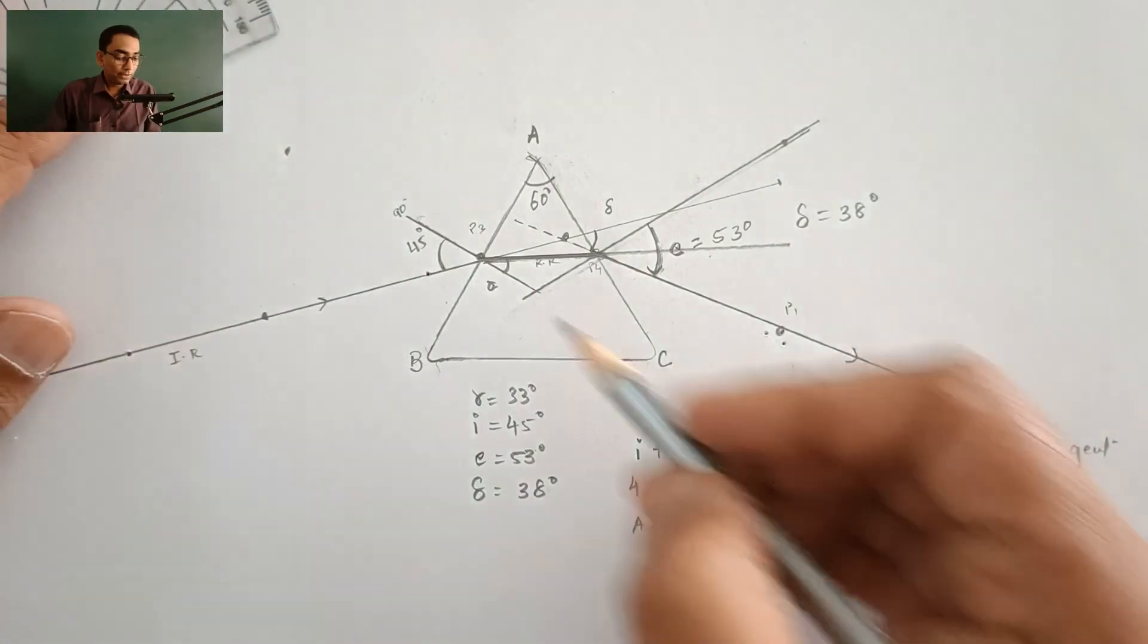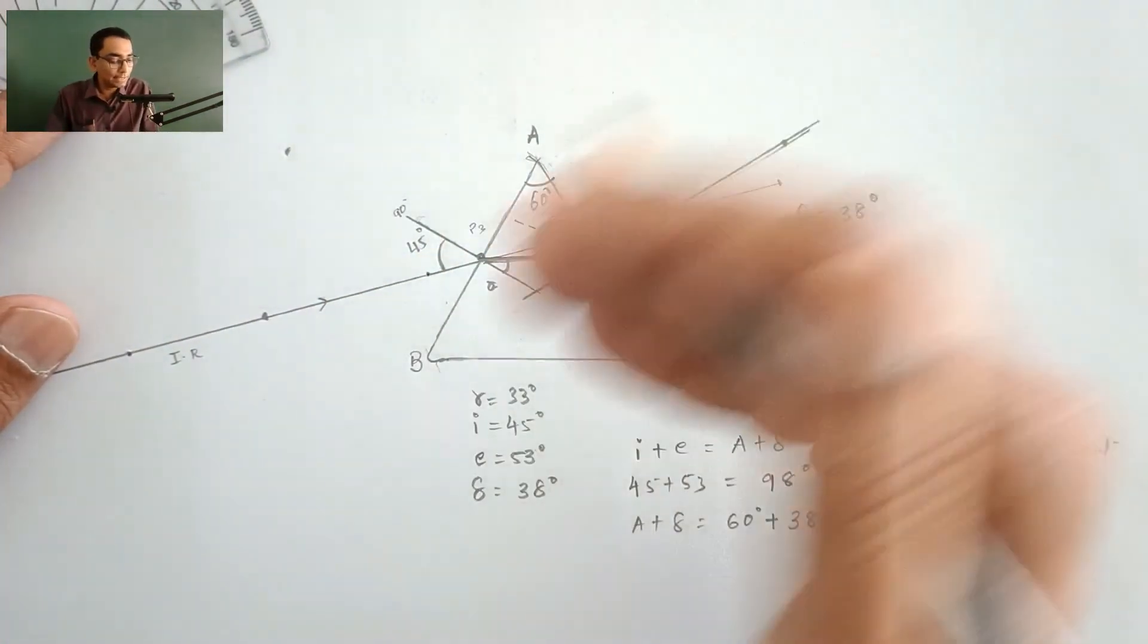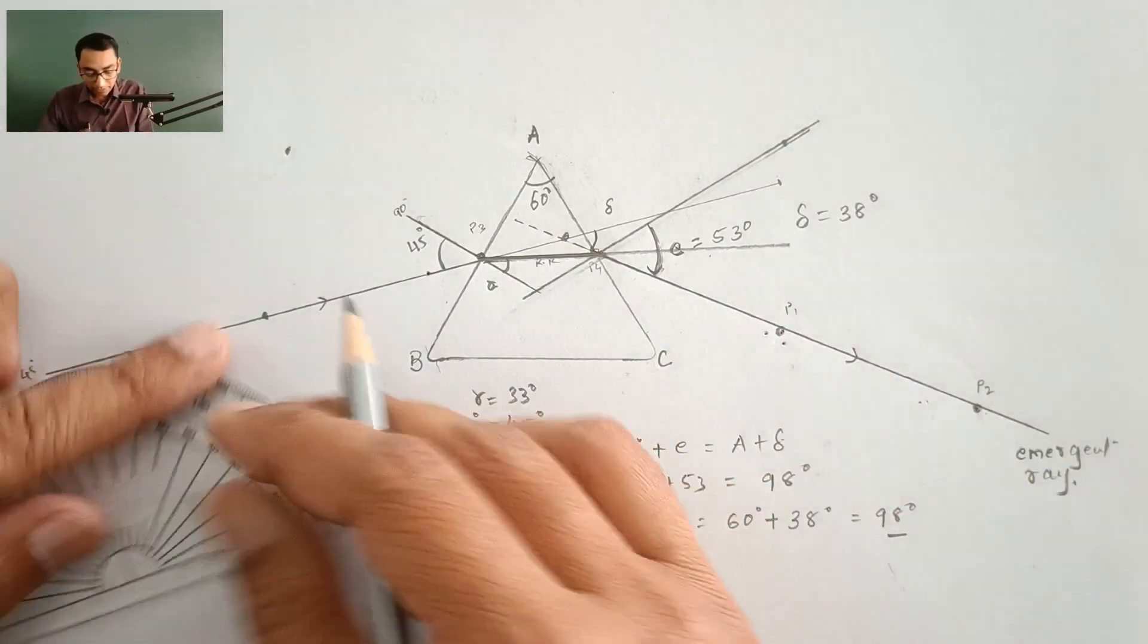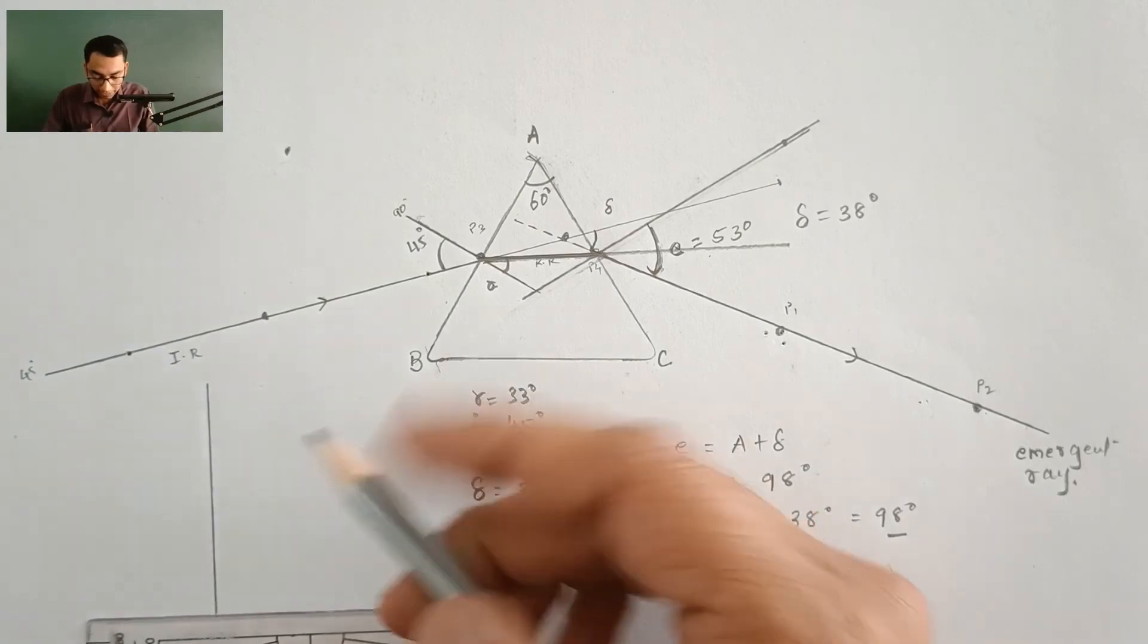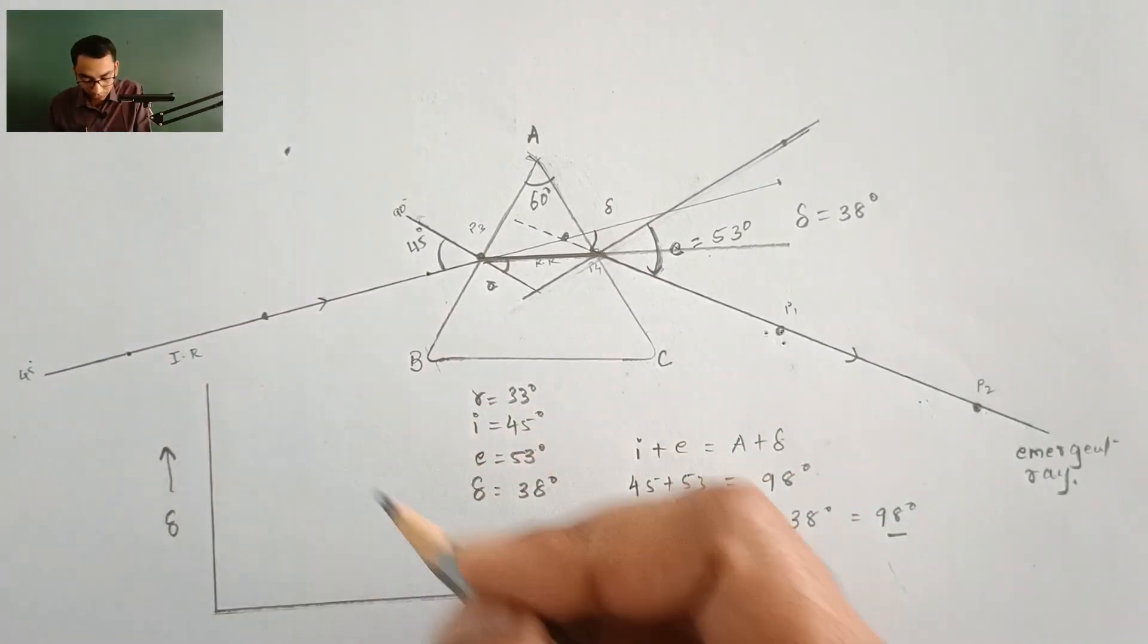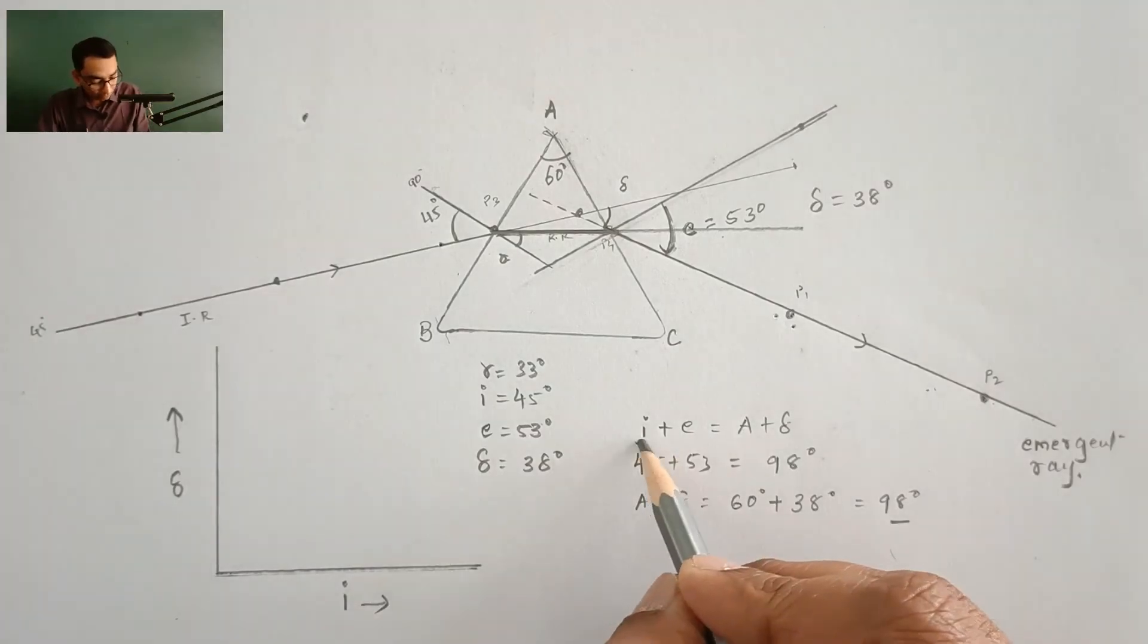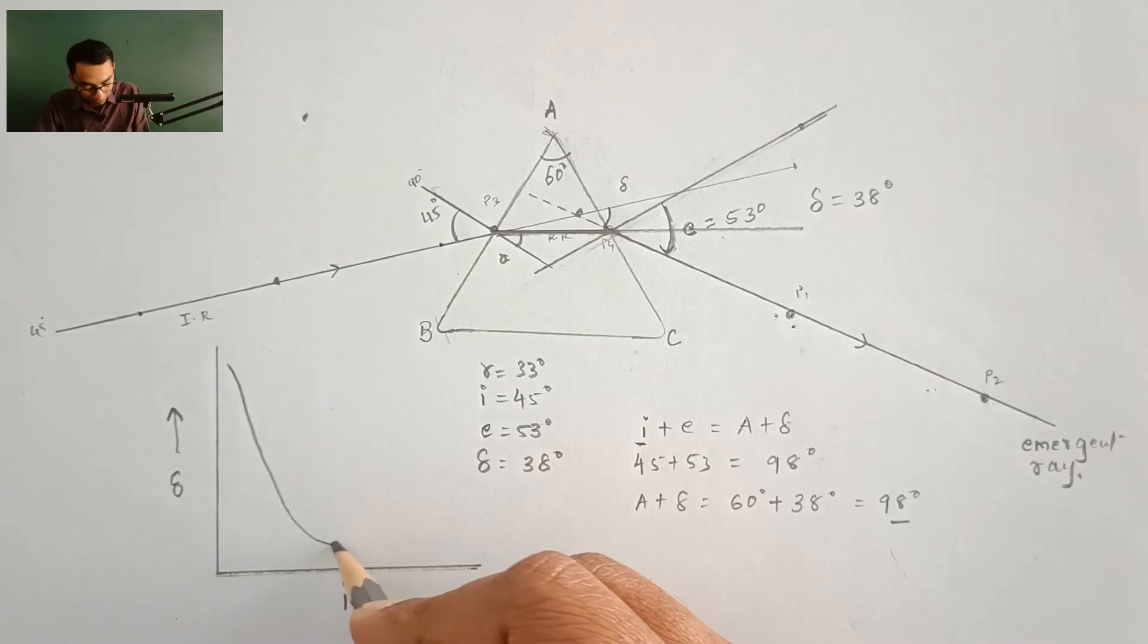All the angles are given and similarly you can make the angle of incidence as 60 degrees, 30 degrees, other angles and then you can find out the other angles as well. Finally you will need to plot a graph of I and delta. Here the angle of deviation and here the angle of incidence. For all the other values you will have to plot the graph for angle of incidence and angle of deviation.